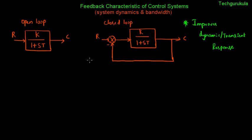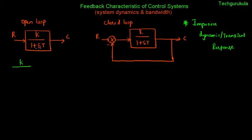Now let us see how negative feedback impacts the bandwidth. In general, control systems are low pass in nature, and this example is a perfect test case to continue our discussion. The magnitude response of the open loop system is found by substituting s = jω, giving k divided by the square root of (1 + ω²T²).